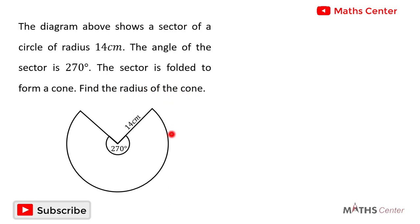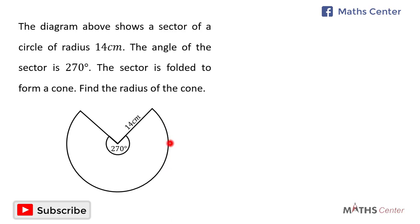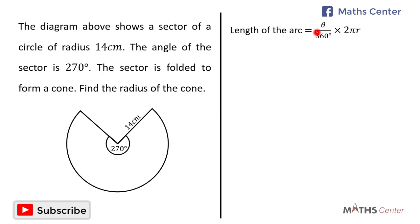If a sector is folded to form a cone, the length of the arc of the sector is equal to the circumference of the circular base of the cone. The length of the arc of a sector is given by the formula theta divided by 360 degrees times 2 pi r, where theta is the angle of the sector and r is the radius of the sector.